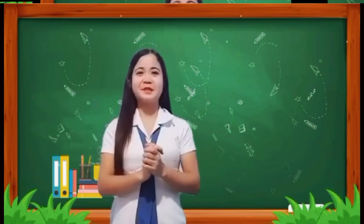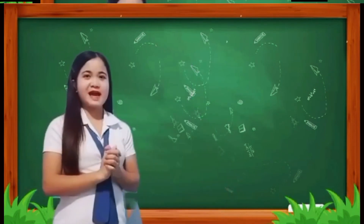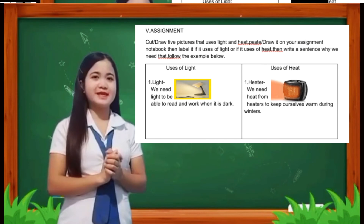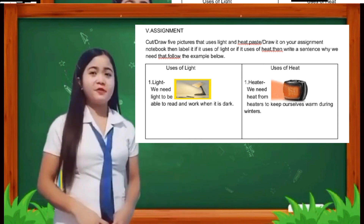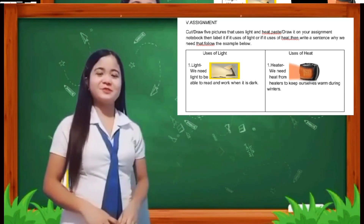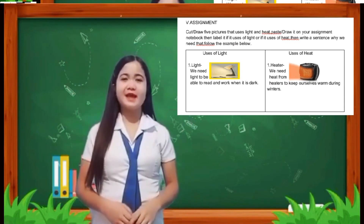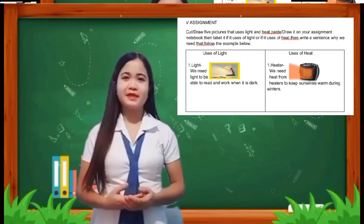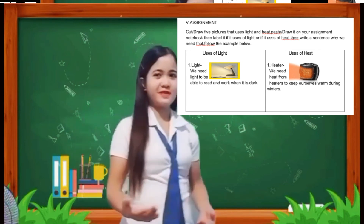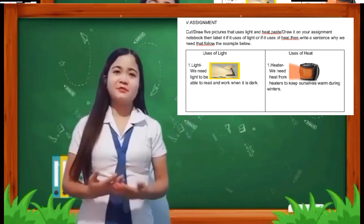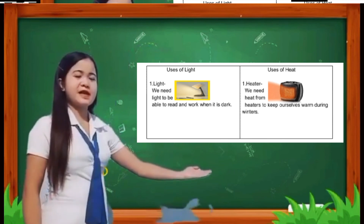Okay class, time is up. Pass all your work at the count of five. Before we end our discussion for today, this is your assignment that needs to be passed for our next meeting. All you need to do is to cut or draw five pictures that use light and heat, paste or draw them in your assignment notebook, then label each one whether it is uses of light or uses of heat. Then write a short sentence about why we need that thing.